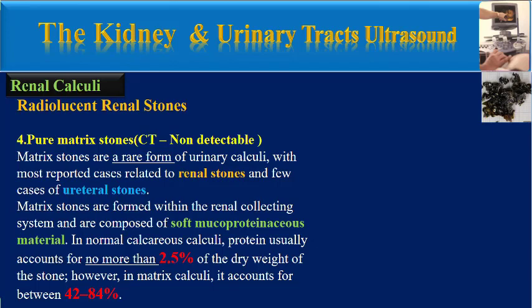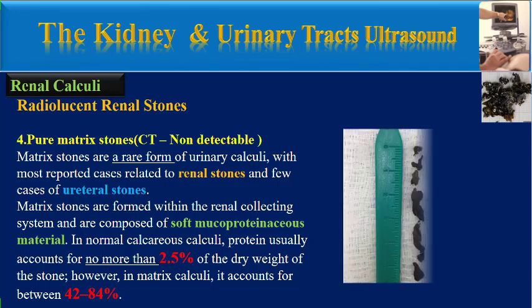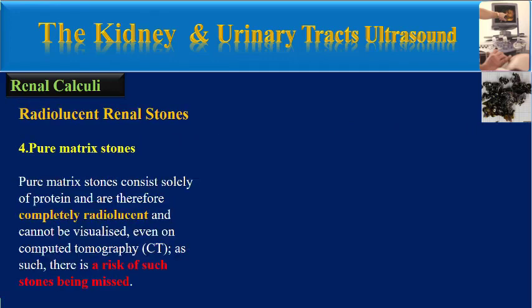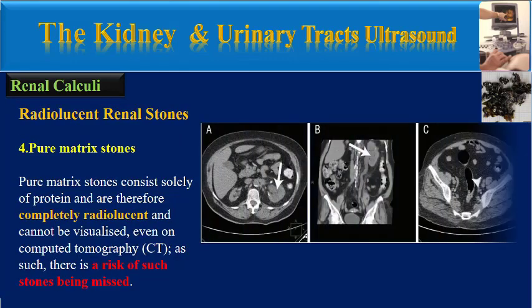However, in matrix calculi protein accounts for between 42 to 84%. Pure matrix stones consist solely of protein and are therefore completely radiolucent and cannot be visualized even on non-enhanced CT. As such, there is a risk of such stones being missed.